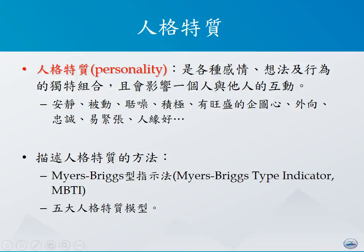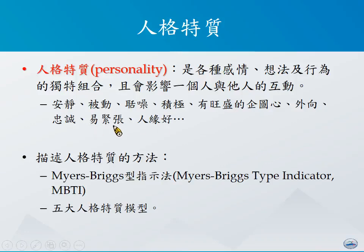谈完态度之后，让我们来谈一谈人格特质的概念。人格特质（Personality）所指的是各种感情、想法、行为的组合。人格特质会影响到一个人跟他人的互动状况，例如他是安静的、被动的、好动的、积极的、有旺盛的好奇心、忠诚、易紧张、人缘好等等。